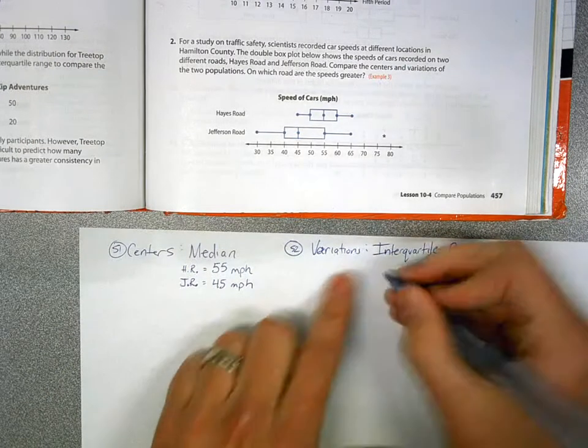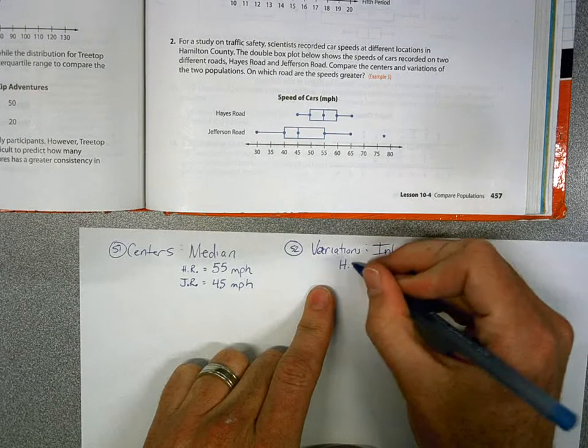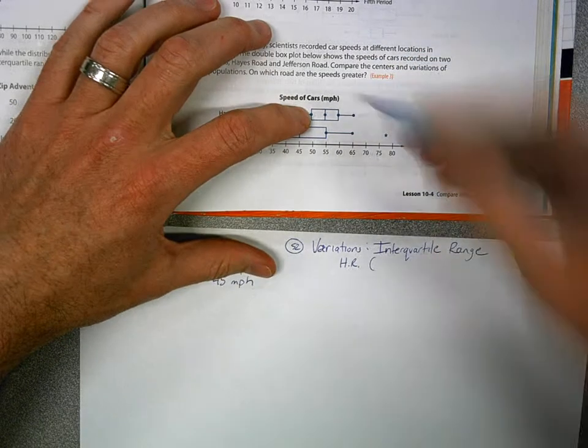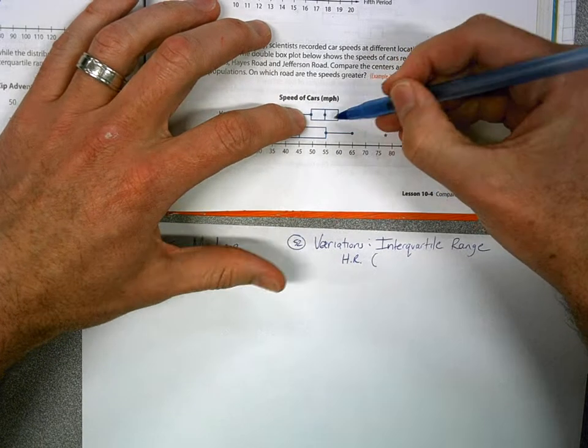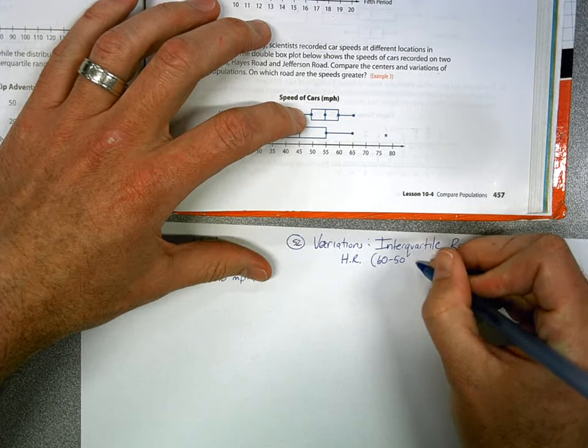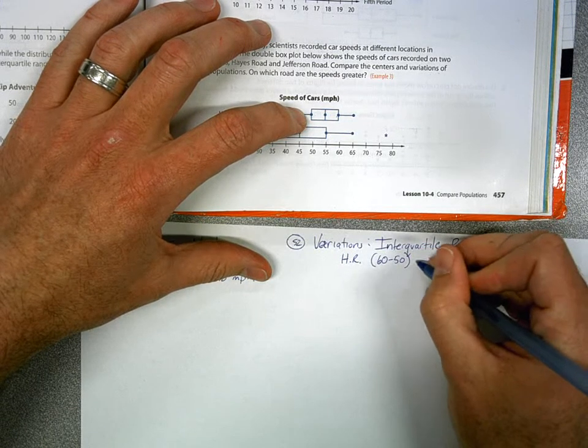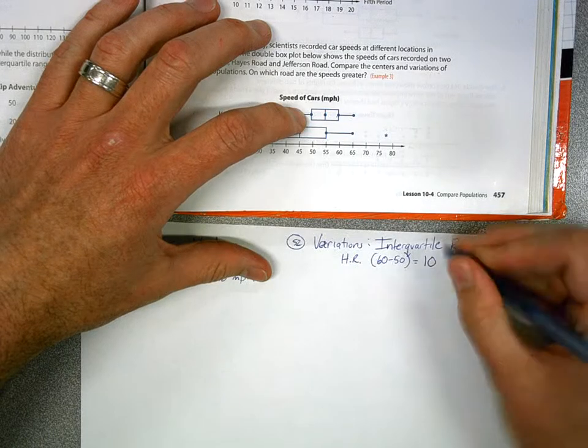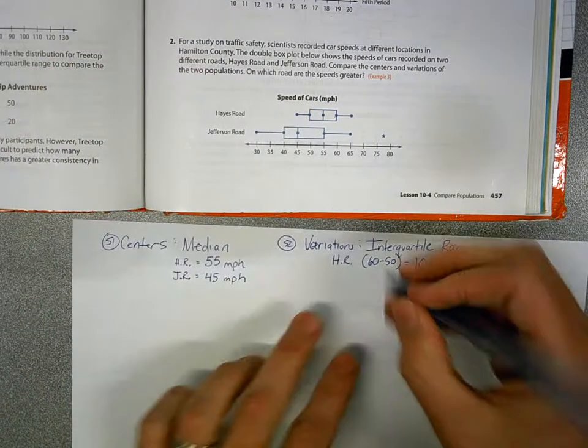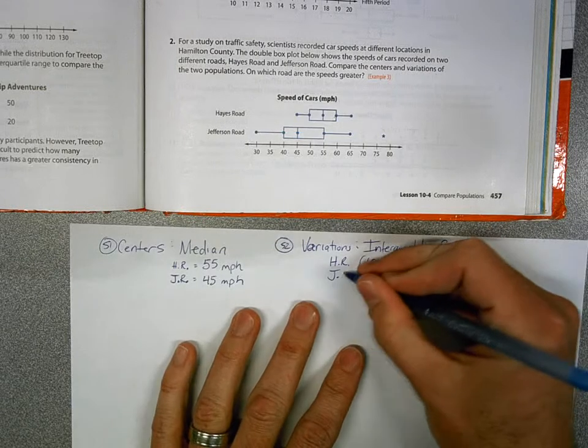So if I'm looking here, for Hayes Road, for note purposes, I'm going to write this down, the distance between 50 and 60. And of course, to find that, we can subtract them. And that ends up being 10 miles per hour. That's our interquartile range for Hayes Road.